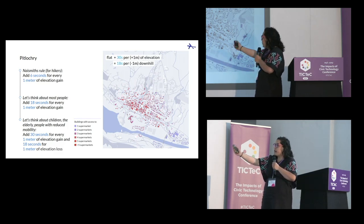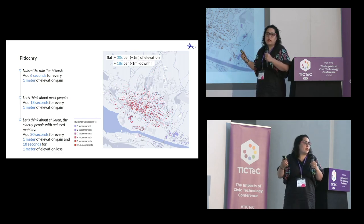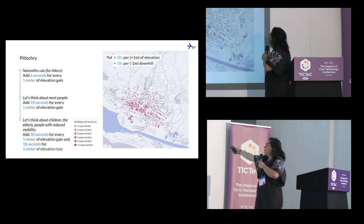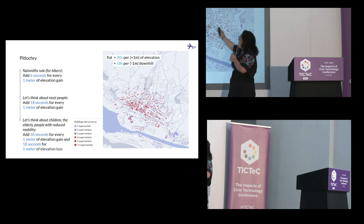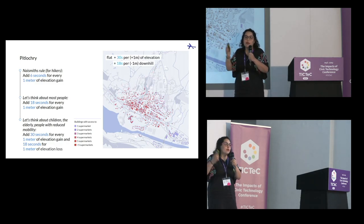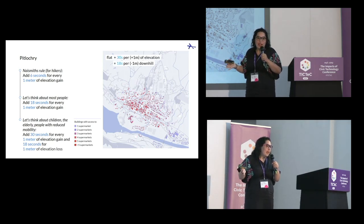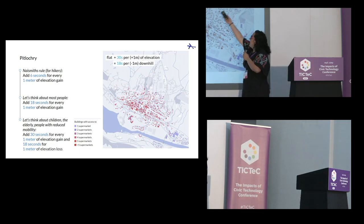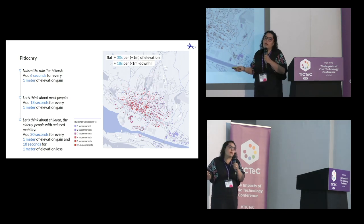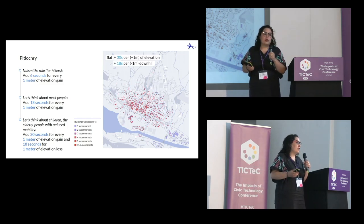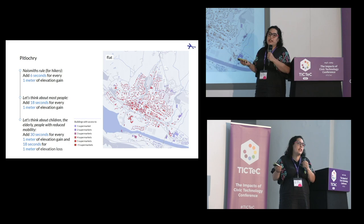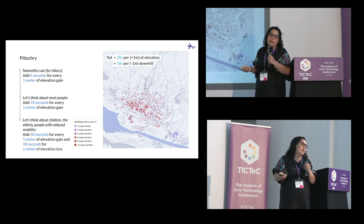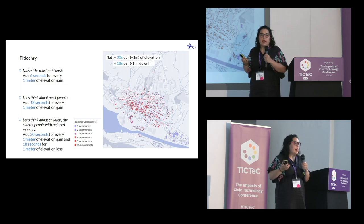What we did is we added 30 seconds for every meter of elevation gain — making it a little more difficult in the algorithm — and 18 seconds for every meter of elevation loss. What you now see is first that the pattern shows the supermarkets are probably very close together, because buildings in the center aren't even losing color — they're staying at access to five or more. Most supermarkets must be exactly there. And the whole area of Pitlochry is now not able to access. So if I'm talking to this local council and trying to understand whether they're meeting the 20-minute city, these are the areas I would ask them about — who lives there, and can we reach out to them? It's important they get different support than those in the center.